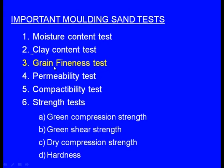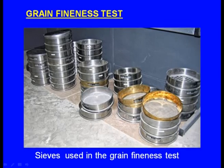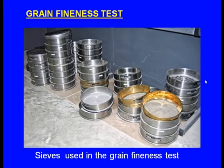Next, let us see the grain fineness test. For this test, a sieve shaker is used. There are different sieves — each with a mesh: some with coarser holes at the top, then progressively smaller holes below, and all sieves are arranged one over another. At the bottom there is a pan. When all the sieves are arranged together the assembly is known as the sieve shaker.